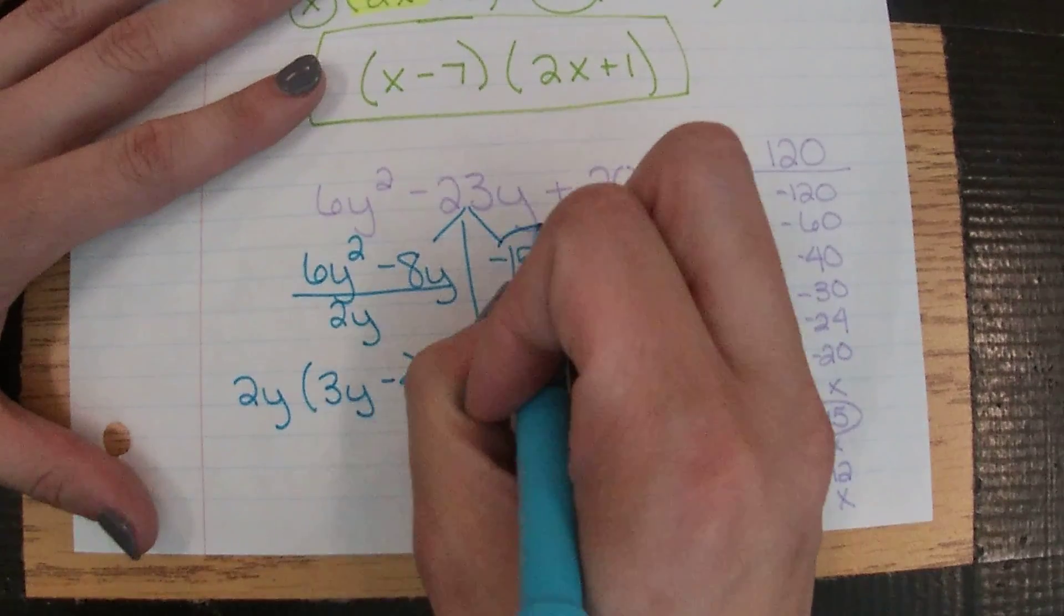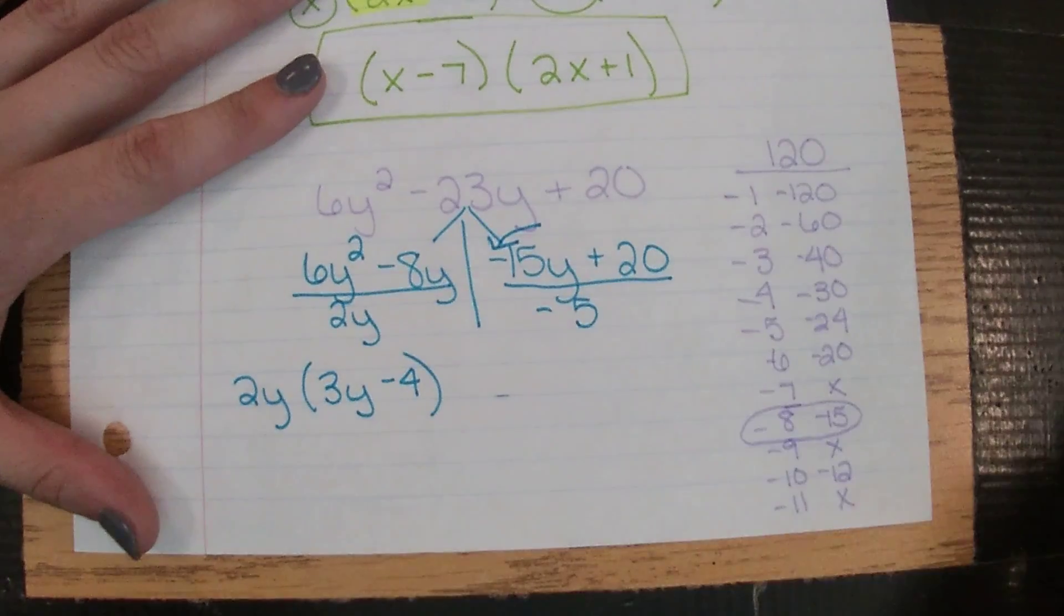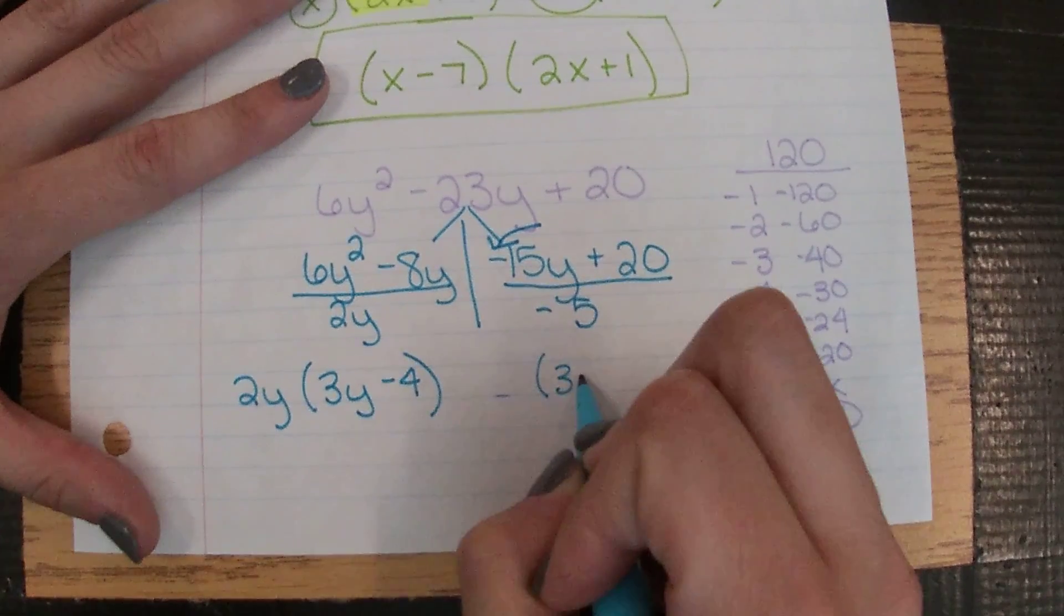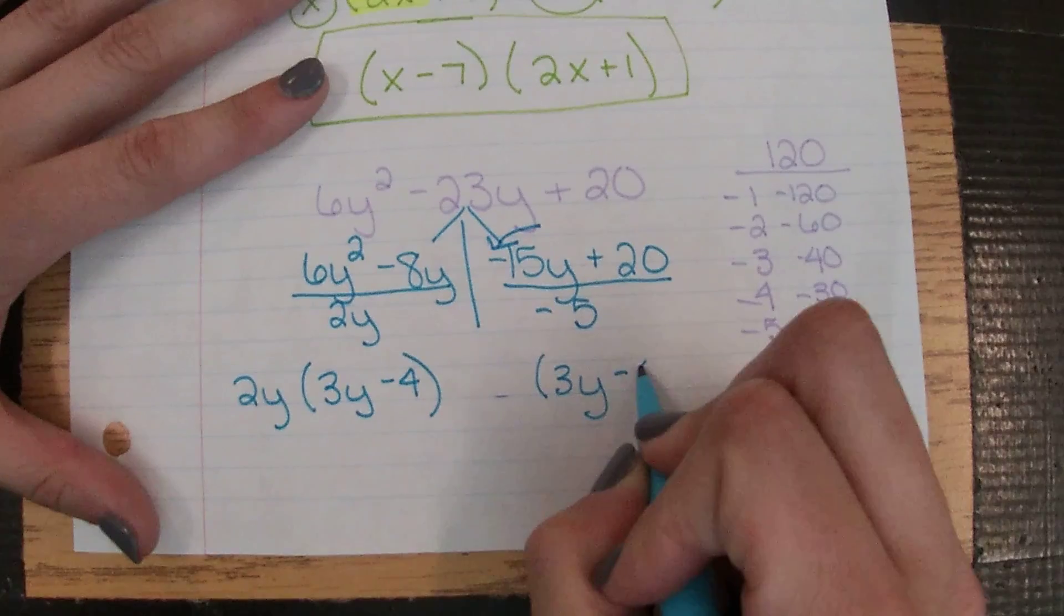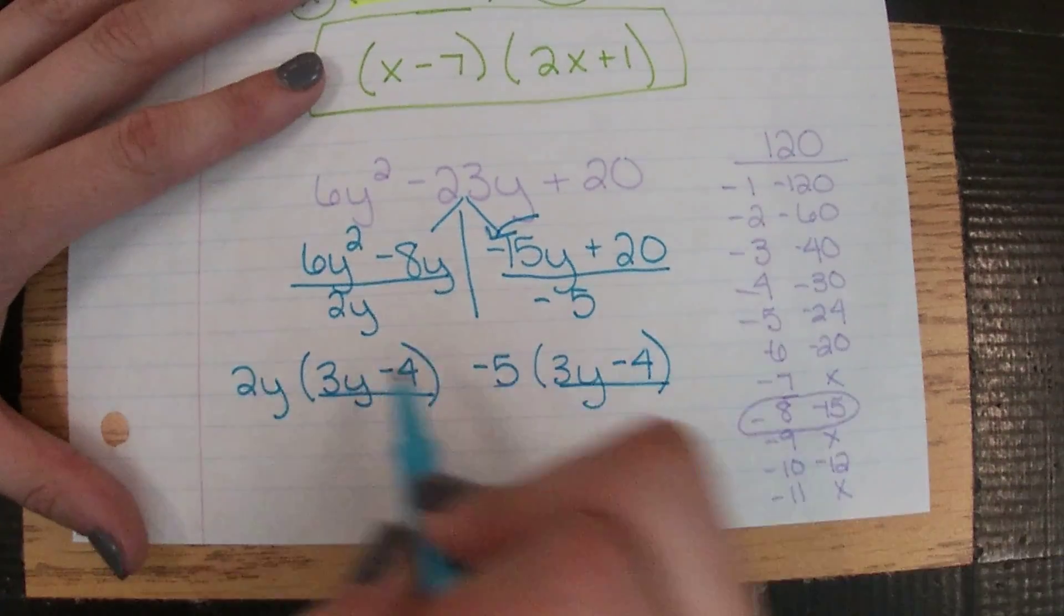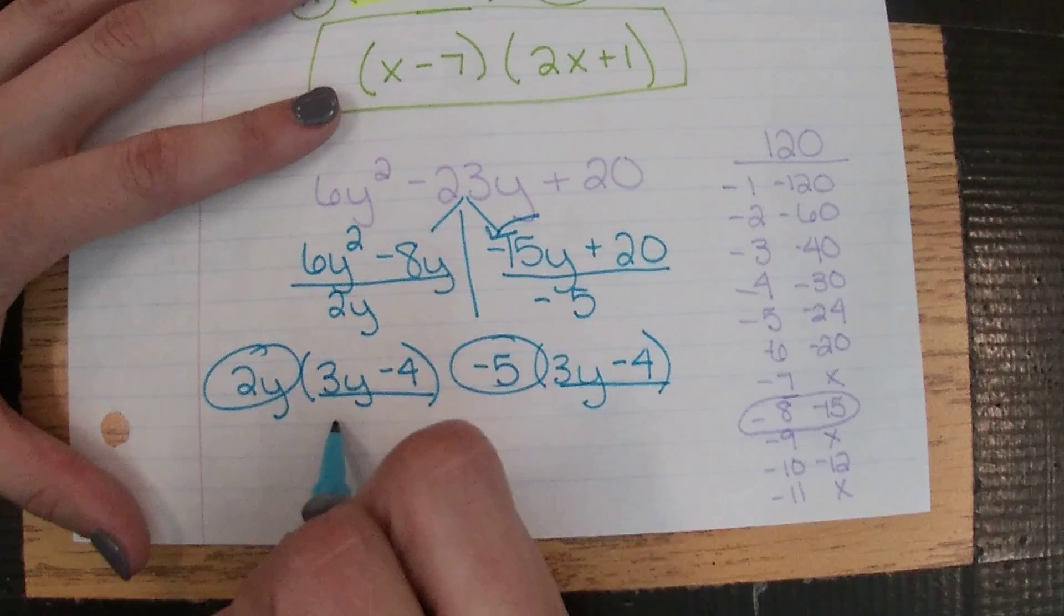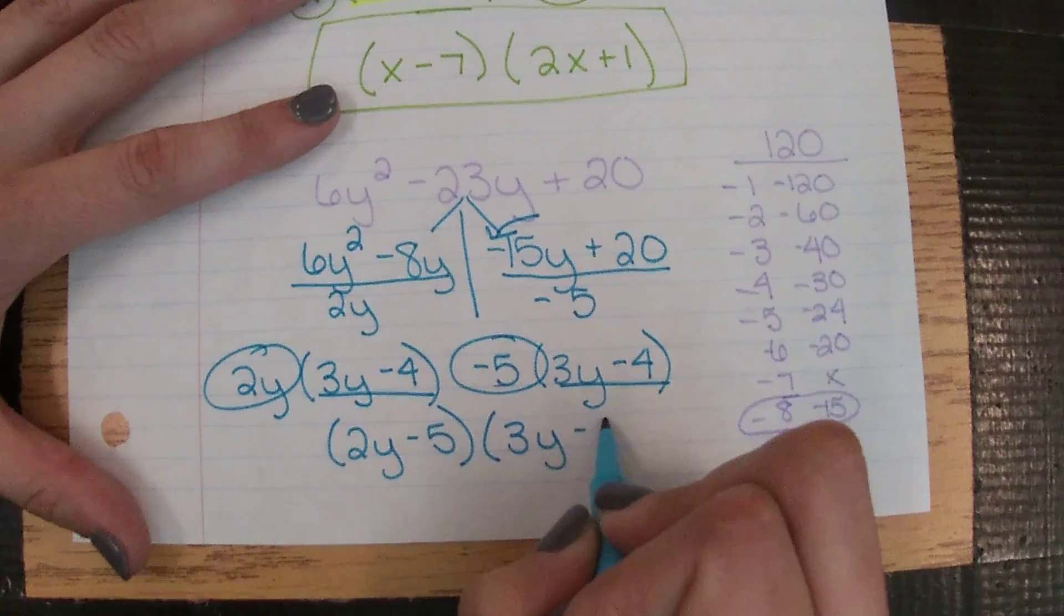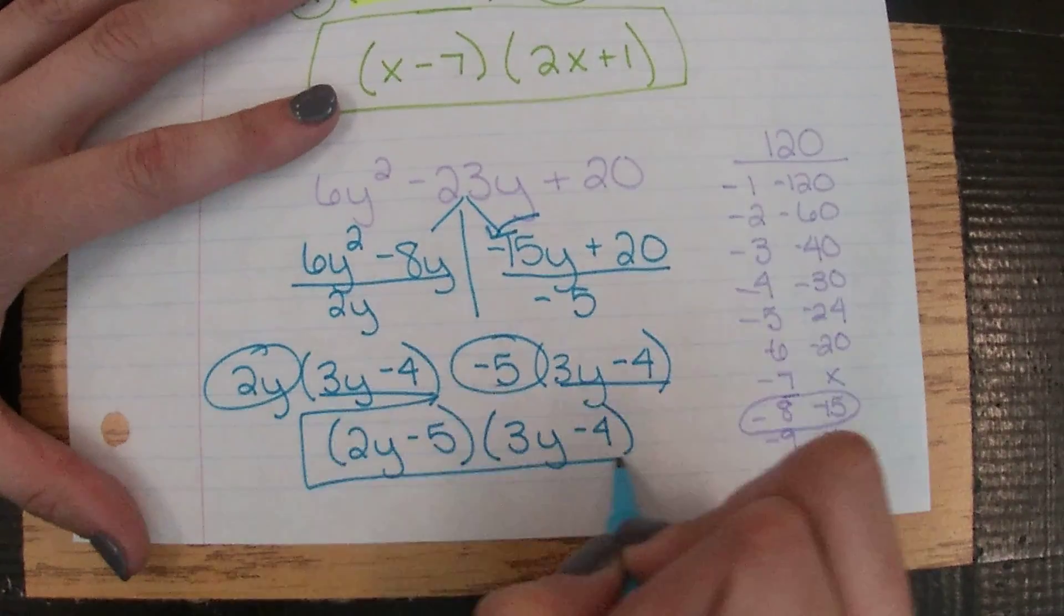15 and 20 have a GCF of 5, but again, our leading one right here is negative, which means I have to make that a negative. So a negative divided by a negative is a positive, and a positive divided by a negative is a negative. Now I have my matching binomials, which is perfect. So my GCFs go side by side in one, and my common binomial is the other.